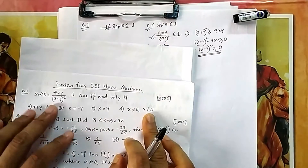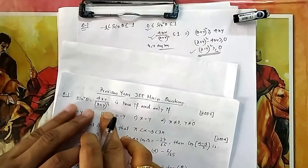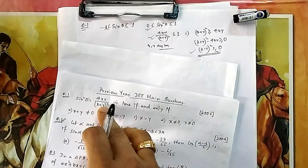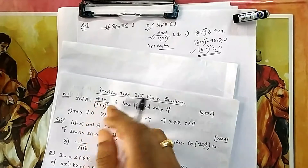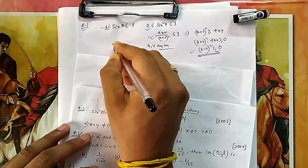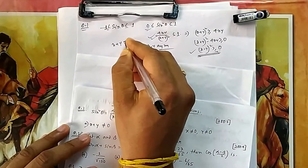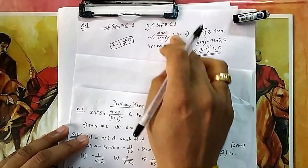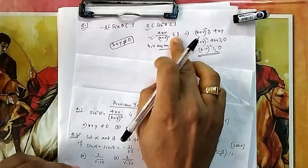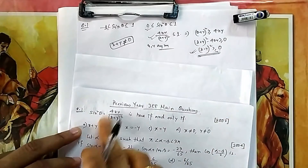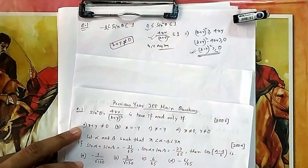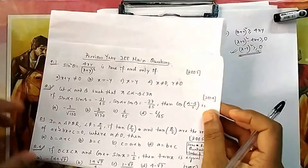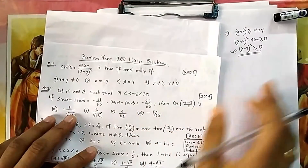That means x and y can take any value, but x+y cannot be 0. If x+y = 0, then 4xy/(x+y)² becomes infinite, which is meaningless since sin θ cannot be infinite. So the condition is x+y ≠ 0; for all other values the inequality is satisfied.